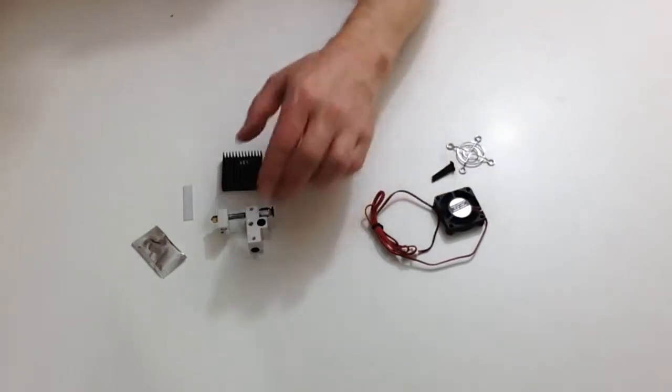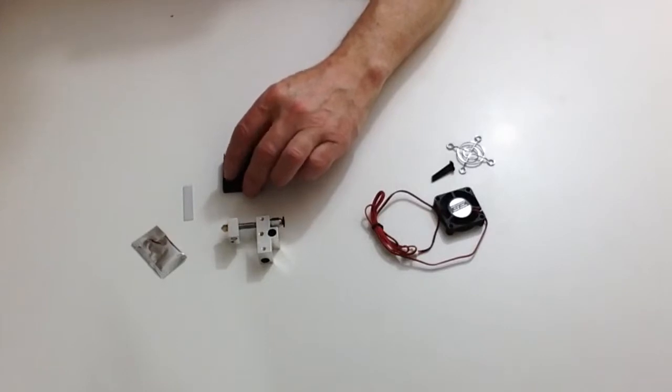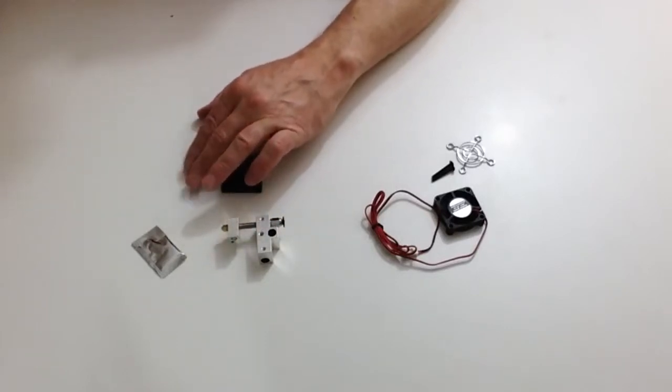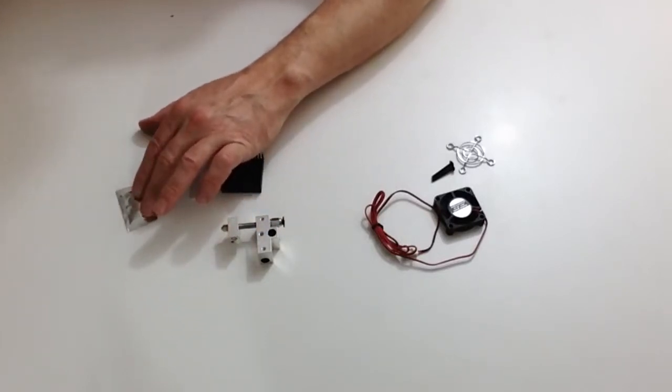You are going to need the head block assembly from the previous stage and also the heat sink, the fan draft blocking strip, and the thermal grease.